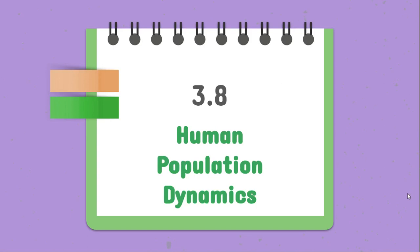Hey everyone, this is Ms. Moriarty. I'm here to discuss topics 3.8 and 3.9, the last two topics of Unit 3. Here in 3.8, we'll be talking a little bit about some human population dynamics.